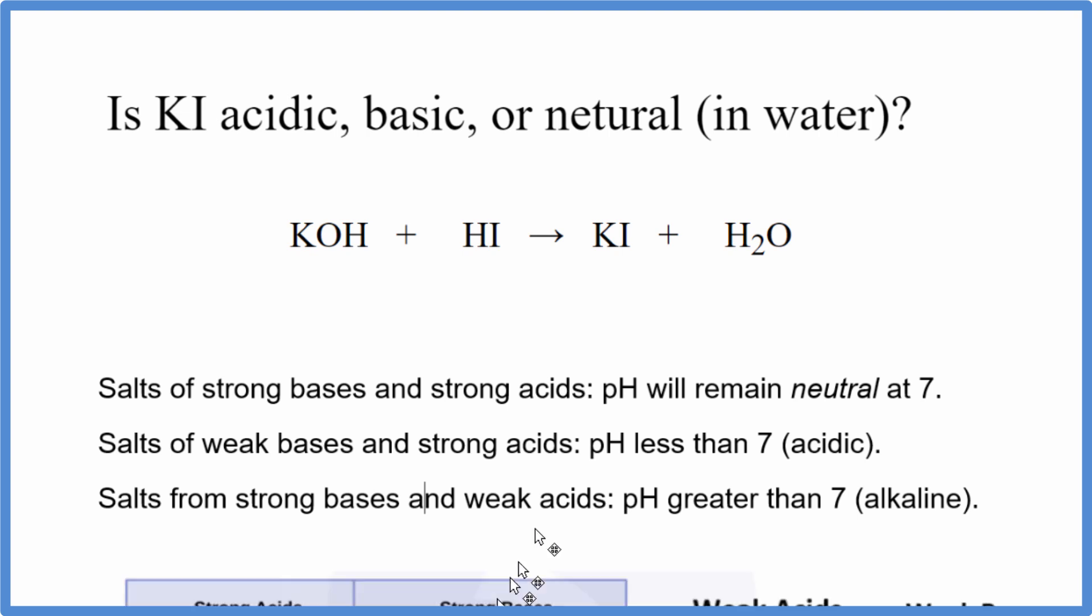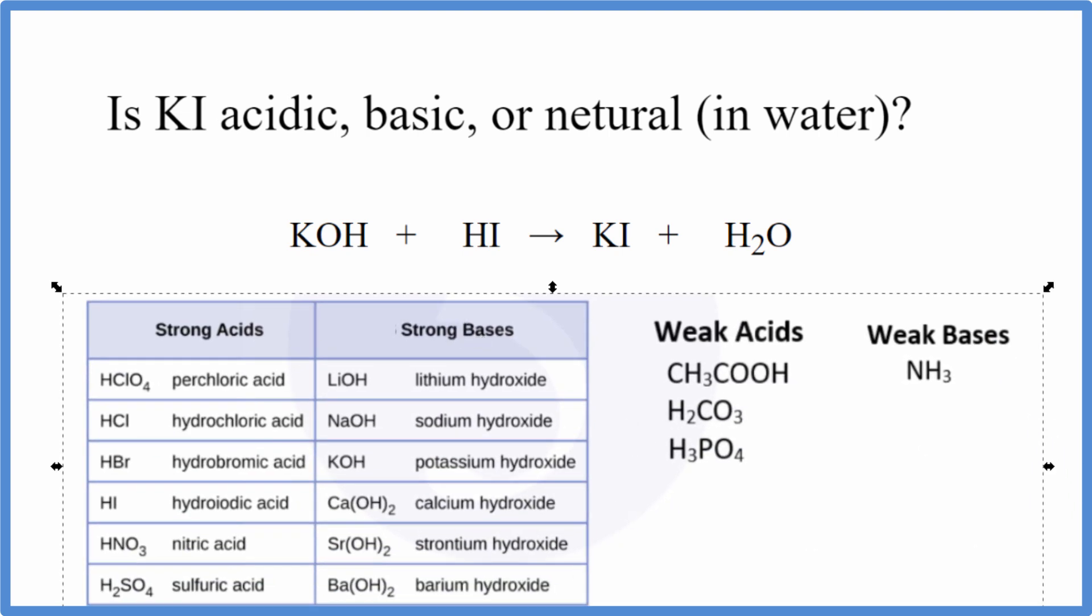So let's take a look at this table here. This shows us that if we're looking for first KOH right here, potassium hydroxide, that is a strong base. I'm going to write SB for strong base. HI right here, hydroiotic acid, that's a strong acid.